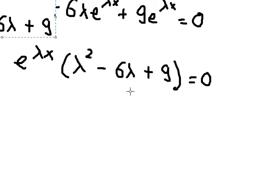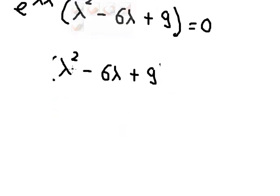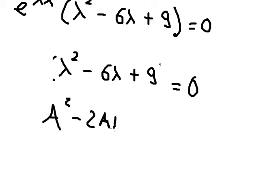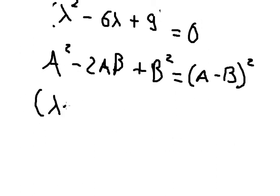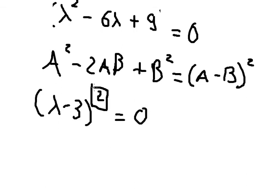We need to solve λ² − 6λ + 9 = 0. We recognize this matches the identity a² − 2ab + b², which is a perfect square. So this factors as (λ − 3)² equals zero, meaning we have a repeated factor of (λ − 3).